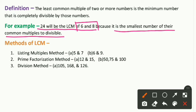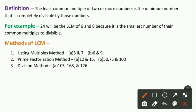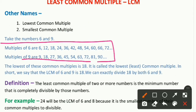Now let's learn the methods for finding the LCM of two or more numbers. The first method is the Listing Multiples Method — we already used it to find the LCM of 6 and 9. We will also apply it to find the LCM of 5 and 7. The second method is the Prime Factorization Method, and the third is the Division Method.